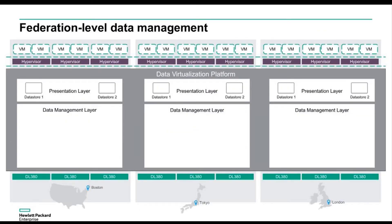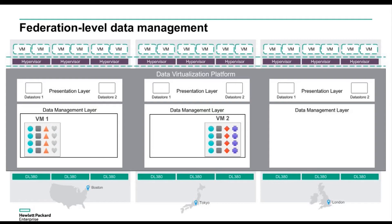Zooming out a level, we have what we call the federation — the data virtualization platform extending across multiple clusters. This is where we get the ability to do remote backups and maintain deduplication and compression, because they're all talking a common language. Here we've got the DVP going across three different sites, with the presentation and data management layer in each one, and the file system where the metadata lives. Think of data containers as instruction sets on how to put together all the different blocks.